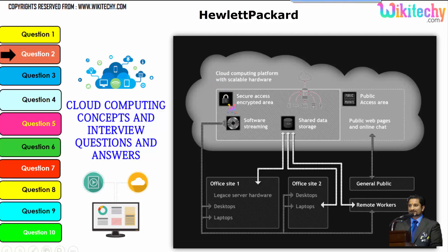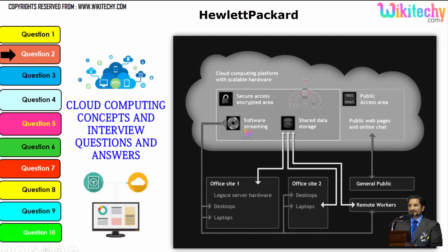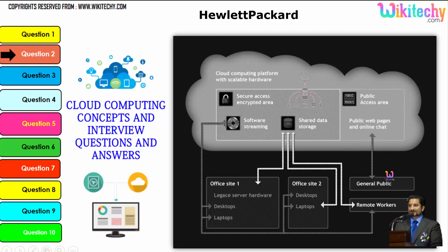Cloud computing has a public access area with public web pages for end users, along with secure data access, shared data storage, and software streaming. Companies can use it as a private kind of environment, and the public can also use it to access web pages or websites. This is how cloud computing works in practice.